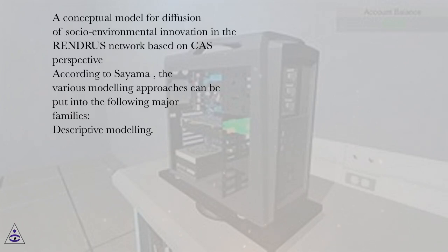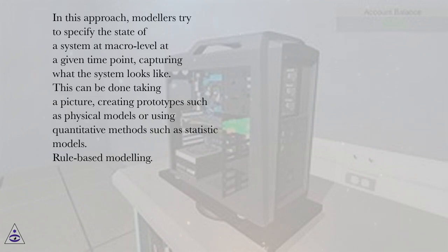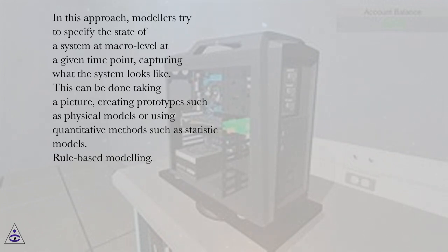A conceptual model for diffusion of socio-environmental innovation in the Rindris network based on CAS perspective. According to Scioma, the various modeling approaches can be put into the following major families. In descriptive modeling, modelers try to specify the state of a system at macro level at a given time point, capturing what the system looks like. This can be done by taking a picture, creating prototypes such as physical models, or using quantitative methods such as statistical models.